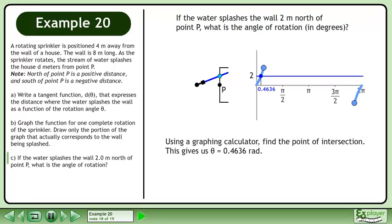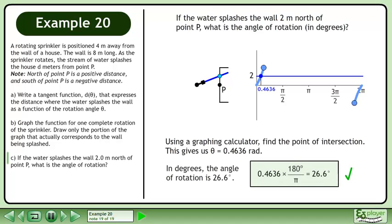Using a graphing calculator, find the point of intersection. This gives us theta equals 0.4636 radians. In degrees, the angle of rotation is 26.6 degrees. We can get this by multiplying the radian angle by 180 degrees over pi.